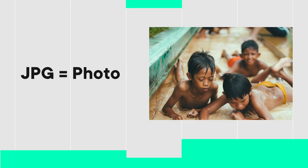The first format is JPEG, which probably everybody knows because most images on the web are JPEGs. You use JPEGs when you have photos or images that use the whole area with colorful pixels — like a typical photo.